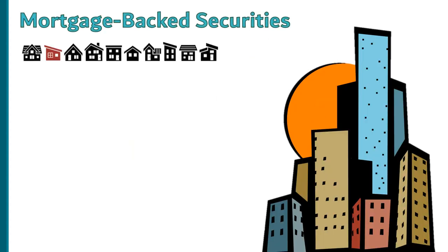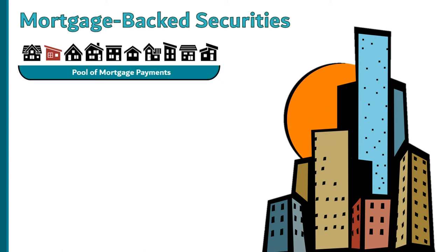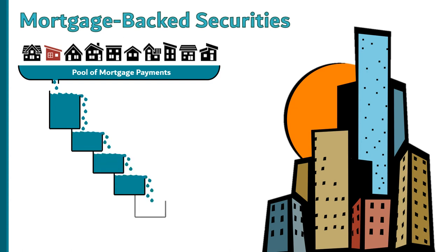These mortgage-backed securities grew into an extremely common investment. Mortgages would be pooled together and then the payments would be broken into tranches. Because many hundreds of millions of dollars worth of mortgages would be pooled together into one security, many different investors could decide which tranche they wanted to invest in. Each month, mortgage payments would be pooled together and investors who bought into the top tranche would be paid first, then down the levels to the bottom tranche.